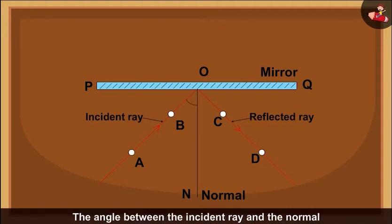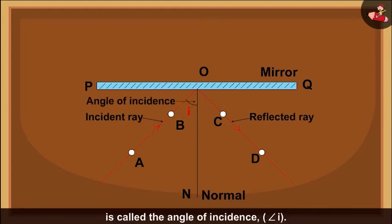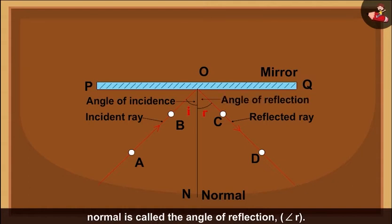The angle between the incident ray and the normal is called the angle of incidence, angle i. Therefore, angle AON is the angle of incidence. The angle between the reflected ray and the normal is called the angle of reflection, angle r. Therefore, angle DON is the angle of reflection.